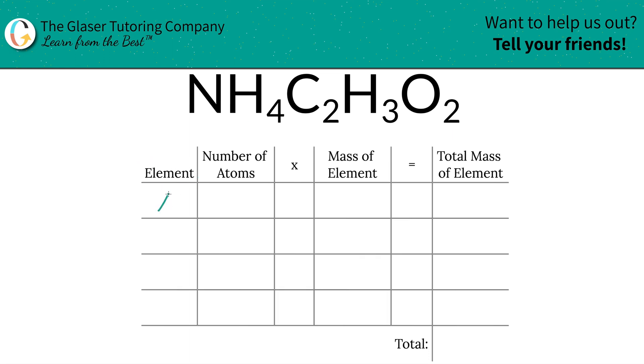So the first thing is we're going to write the elements we see in the compound. So we've got nitrogen, we've got hydrogen, we've got carbon, and oxygen.